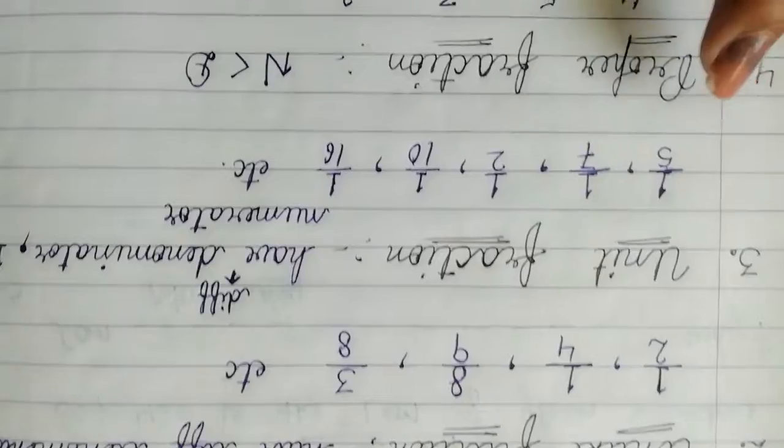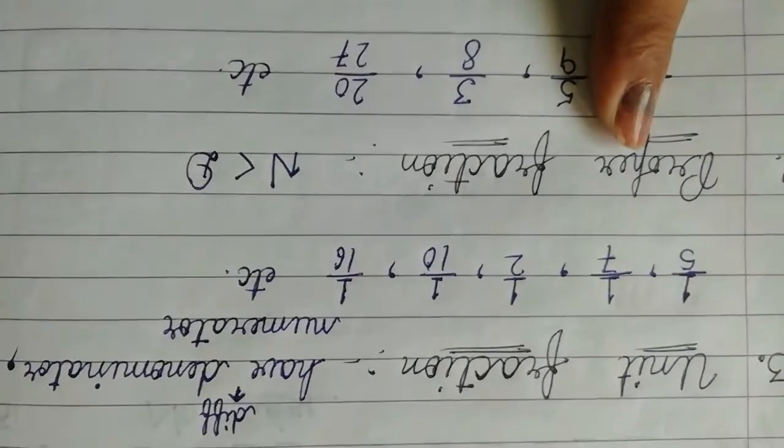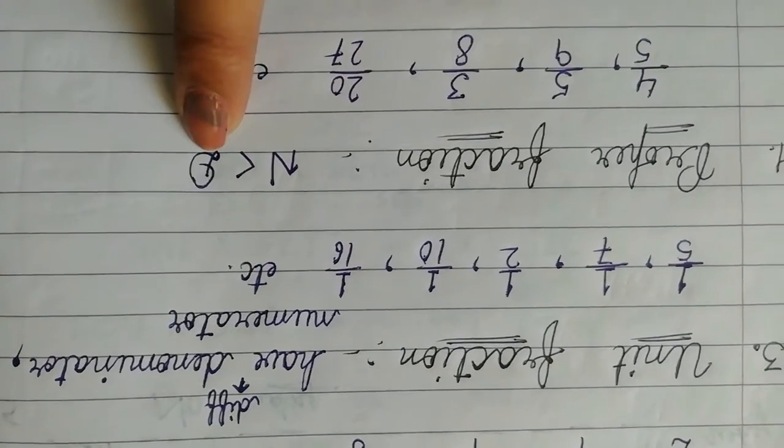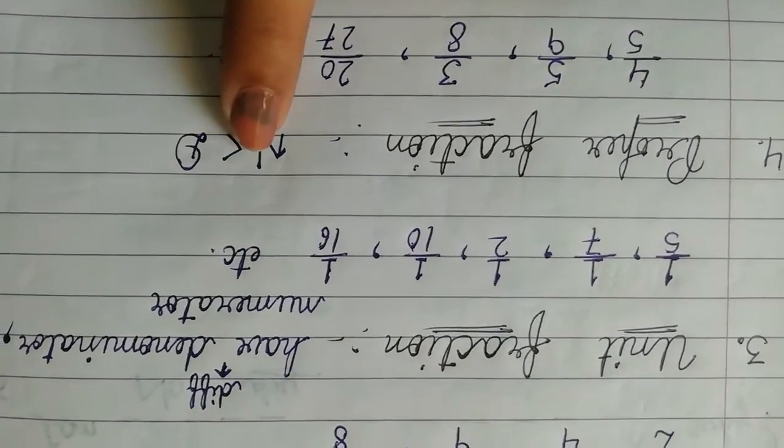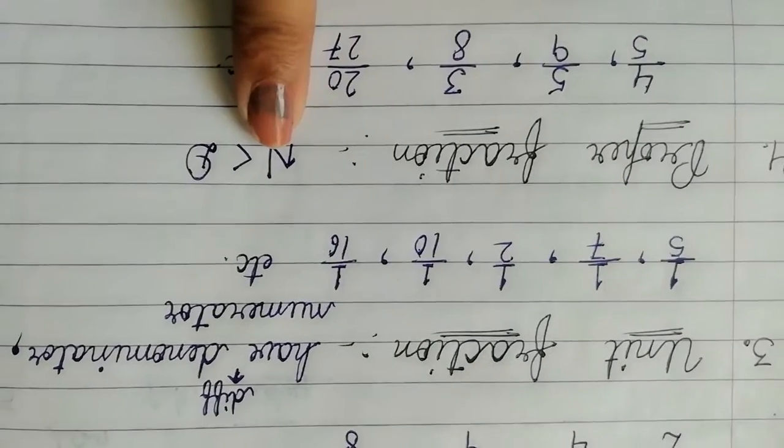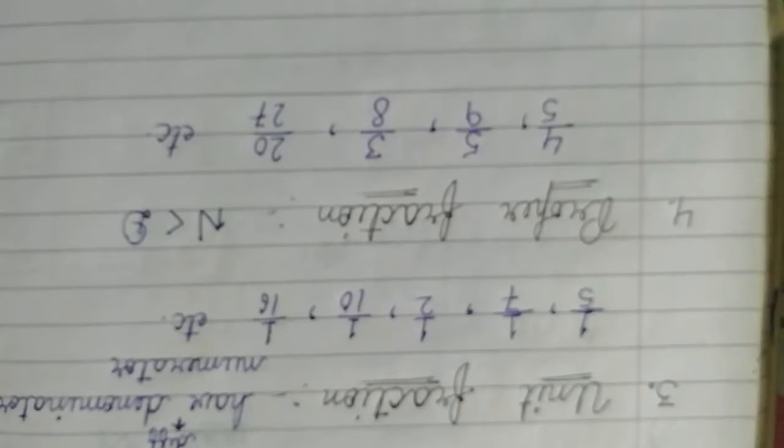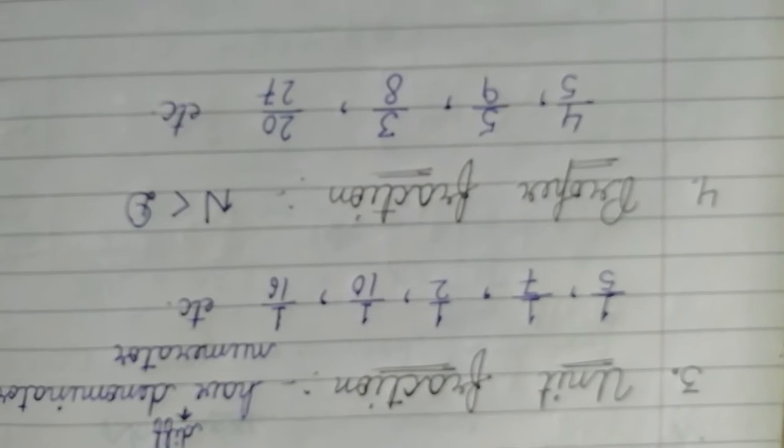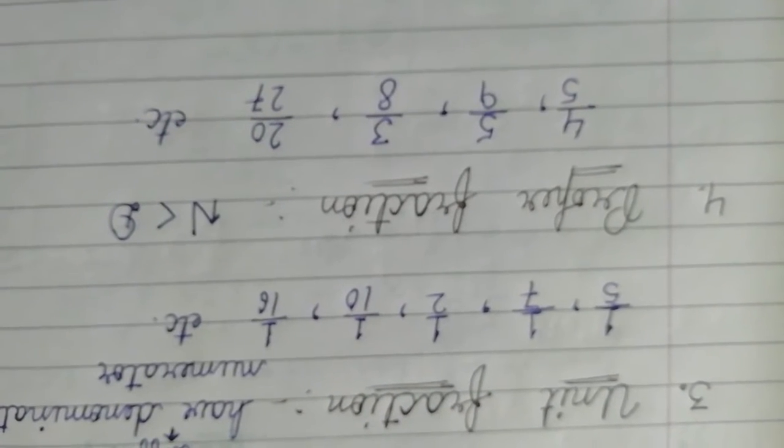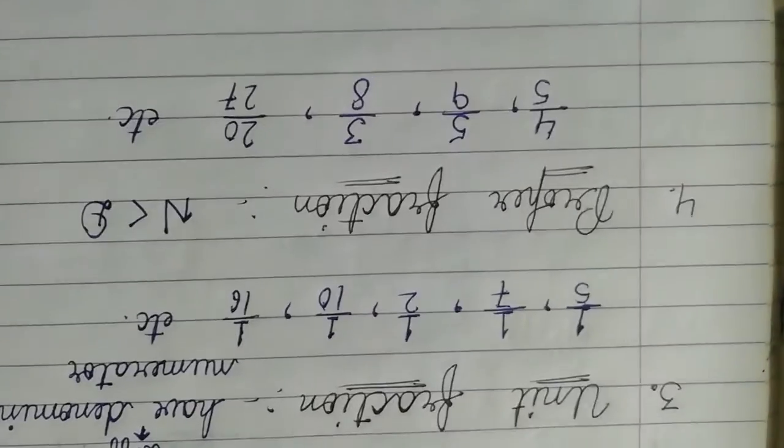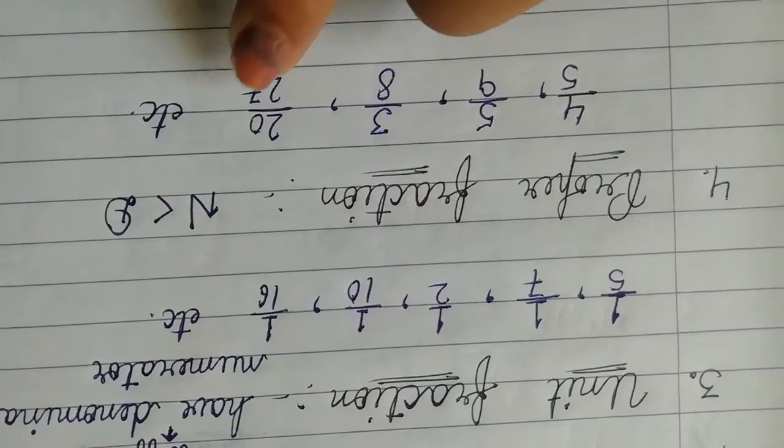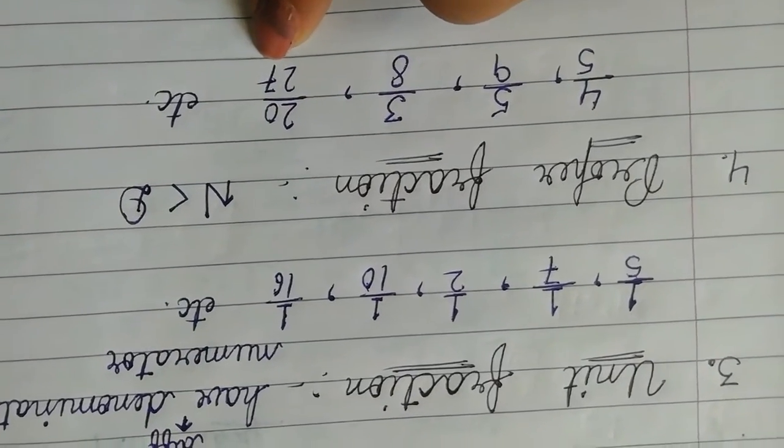Now, proper fraction. In this type of fraction, numerator is always less than denominator. That means, numerator ki jo value hai, wohh chhoti hooghi, small value hooghi as comparison to the denominator. So, numerator is less than denominator. Numerator johai, wohh chhota hooghi, denominator se. Like, 4 by 5, 5 by 9, 3 by 8, 20 by 27, etc.